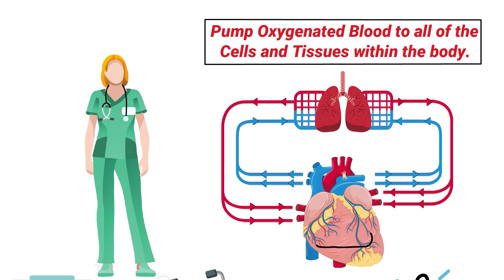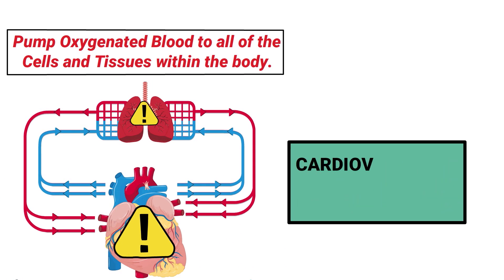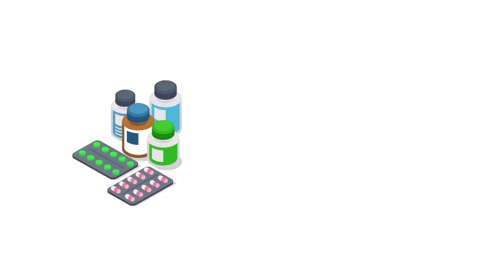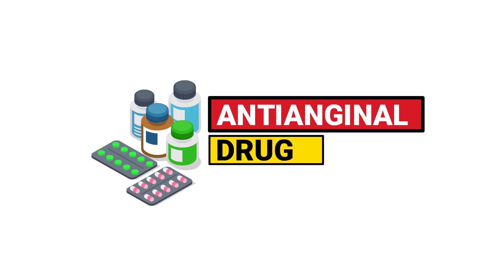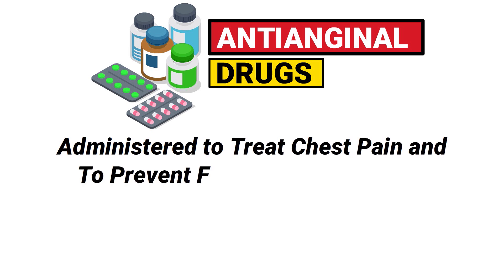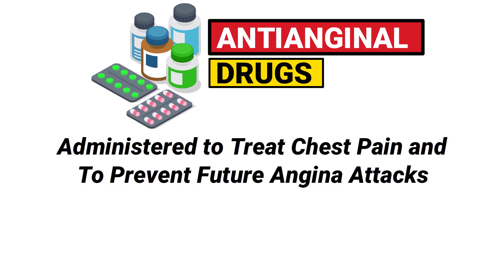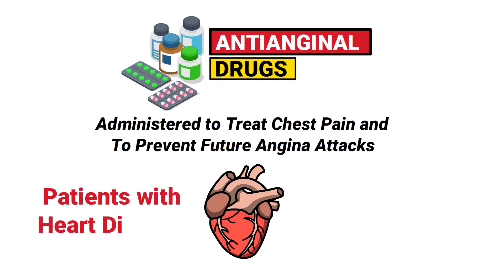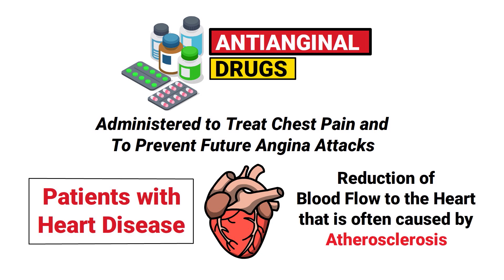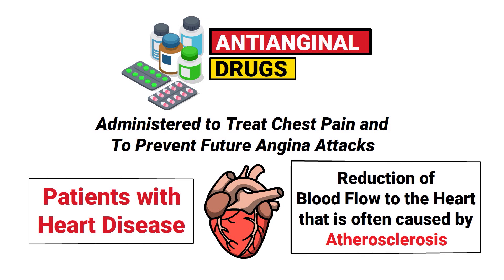Therefore, if a disease is inhibiting the functionality of the heart, it could inadvertently affect the lungs as well. This emphasizes the fact that cardiovascular drugs are an important class of medication to learn and understand. Anti-anginal drugs are administered to treat chest pain and to prevent future angina attacks. This medication is often indicated in patients with heart disease, which results from a reduction of blood flow to the heart, often caused by atherosclerosis — when there is plaque buildup in the arteries.